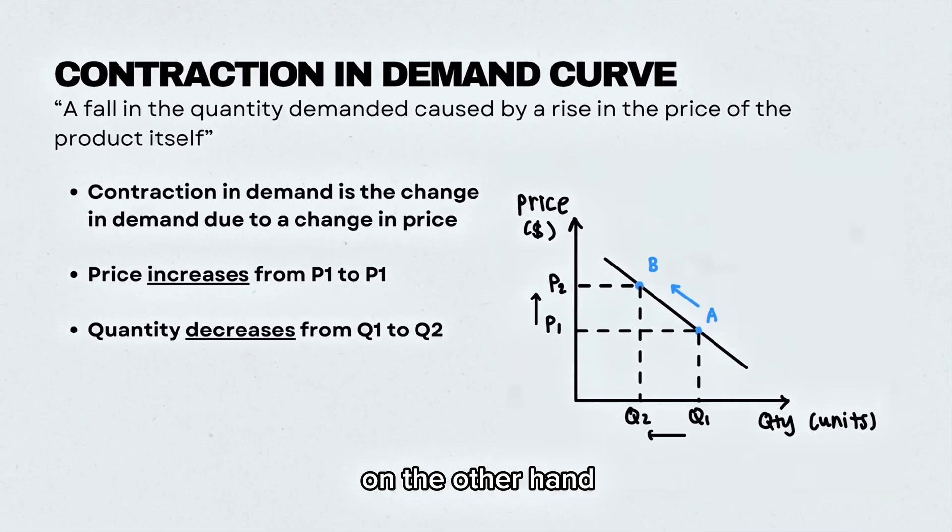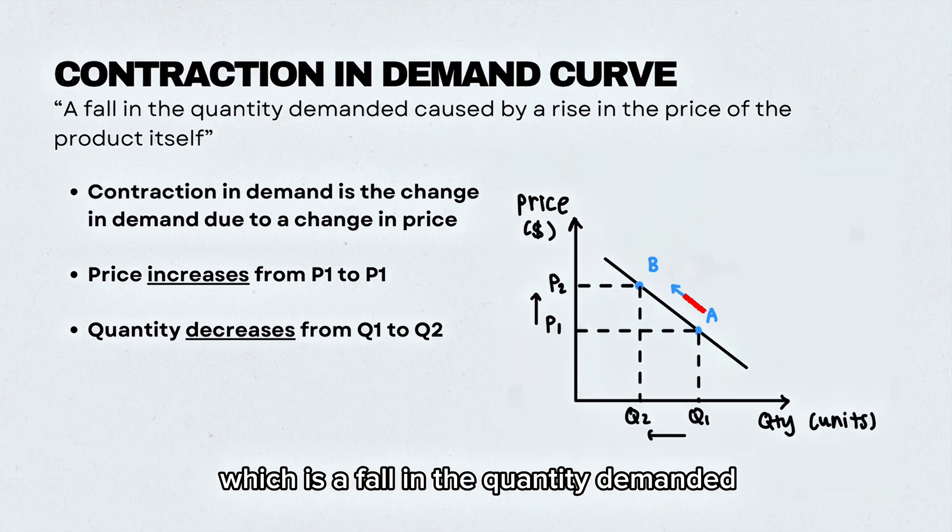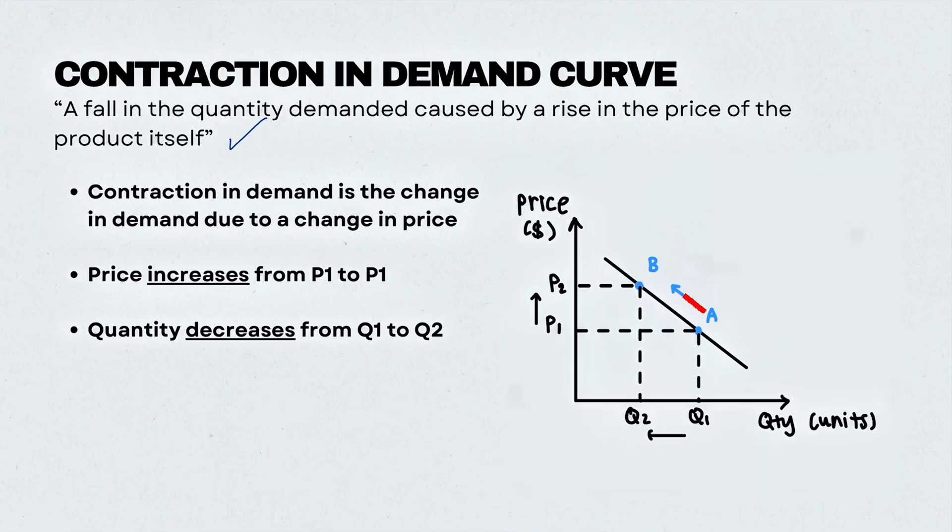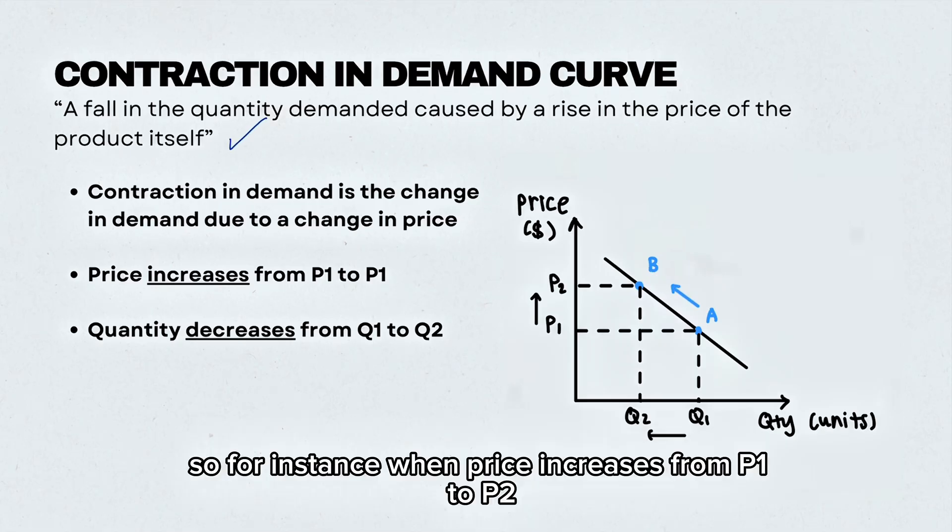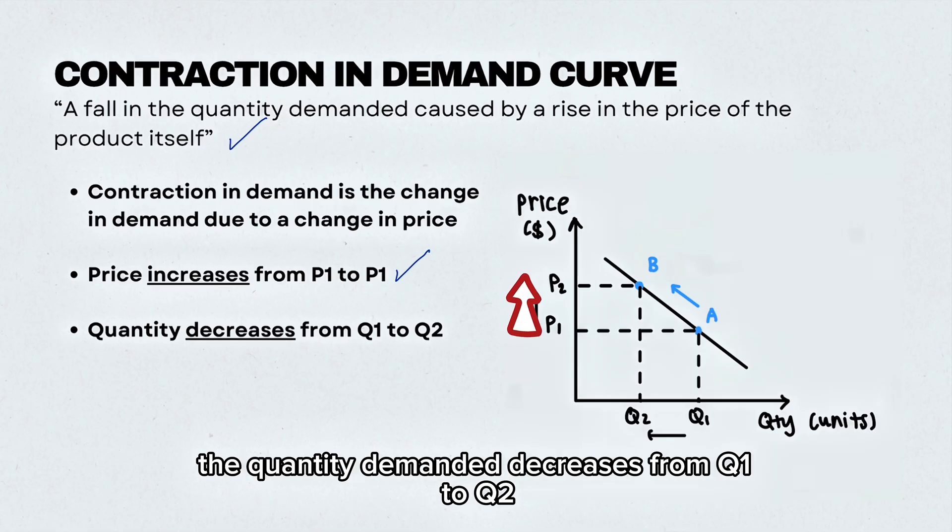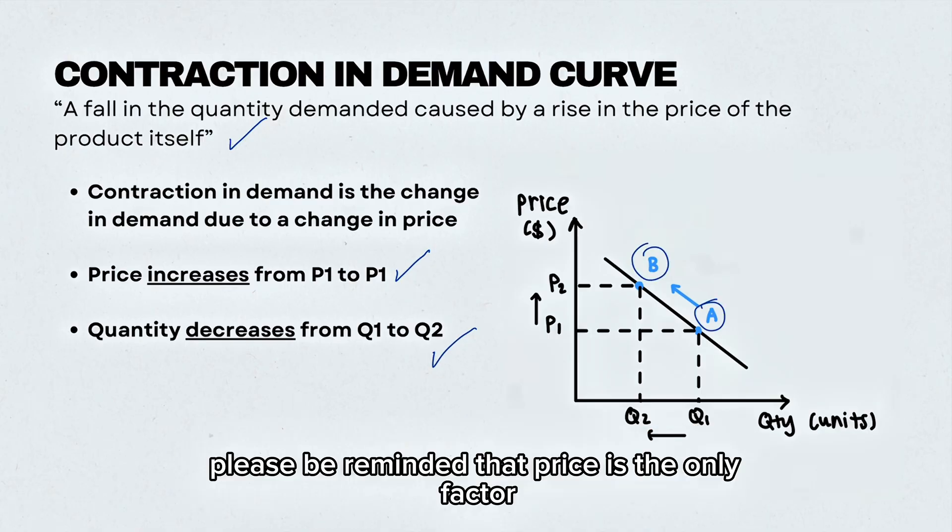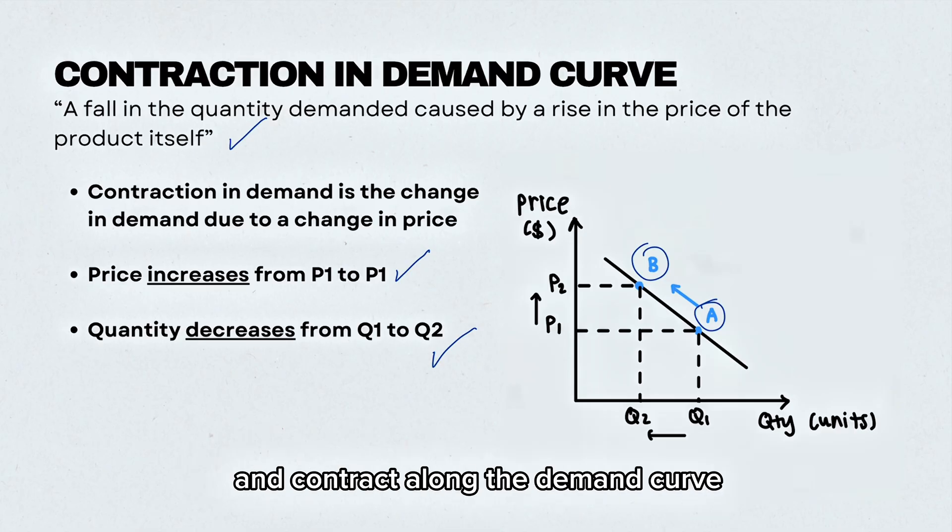On the other hand, we have a contraction in the demand curve, which is a fall in the quantity demanded caused by a rise in the price of the product itself. When price increases from P1 to P2, the quantity demanded decreases from Q1 to Q2, moving from A to B. Please be reminded that price is the only factor that has the ability to extend and contract along the demand curve.